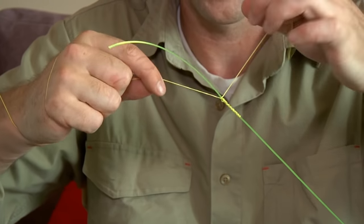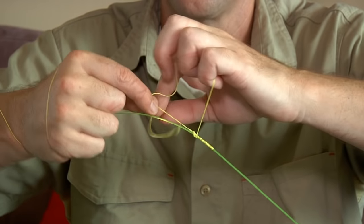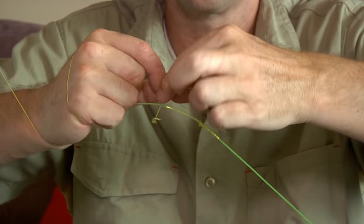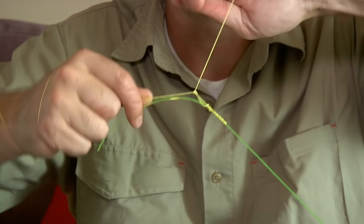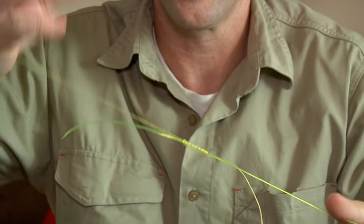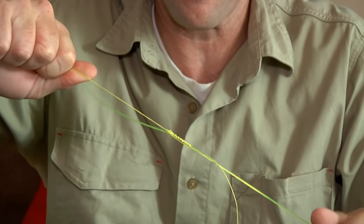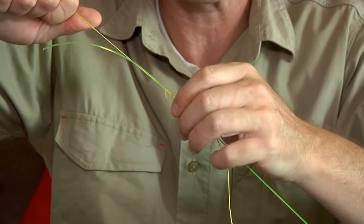And then we'll do that lock knot. So we'll go back again. We'll put it through. One. Two. And three times. So there's your lock knot. So that's all done. So just test it. Make sure it's all locked in nice and tight. There you go. That's solid. That's not going anywhere.